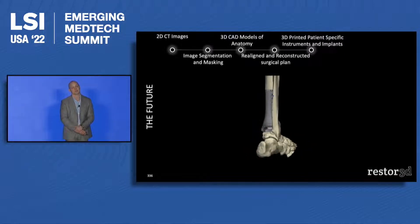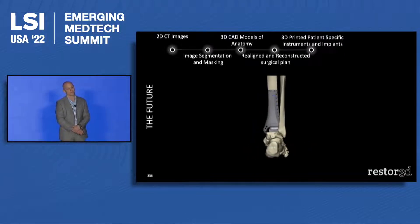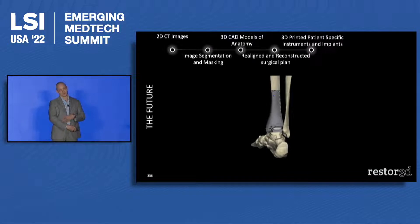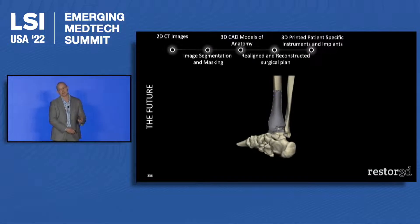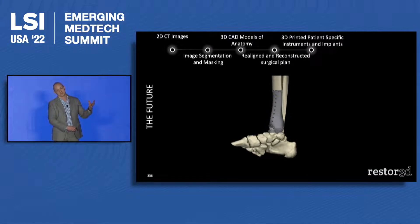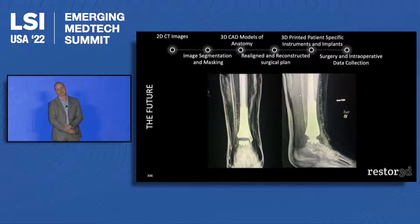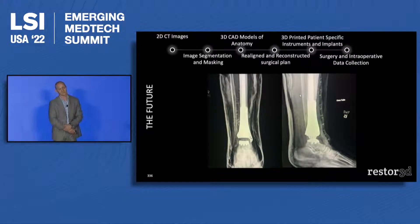Then we design and 3D print an implant. The entire implant is printed, and it contains articulating components, bone attachment points, sometimes soft tissue attachment, and structures that will osteointegrate to the bone. This is an example of that complex case.